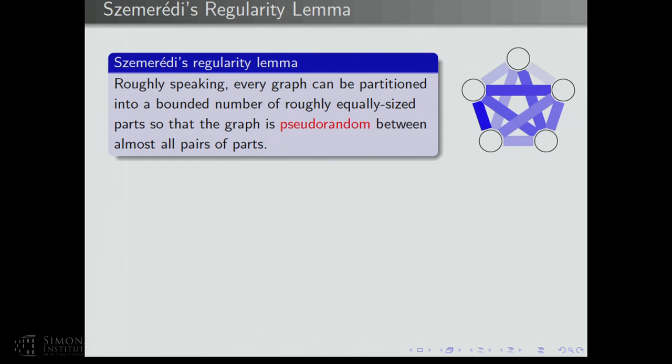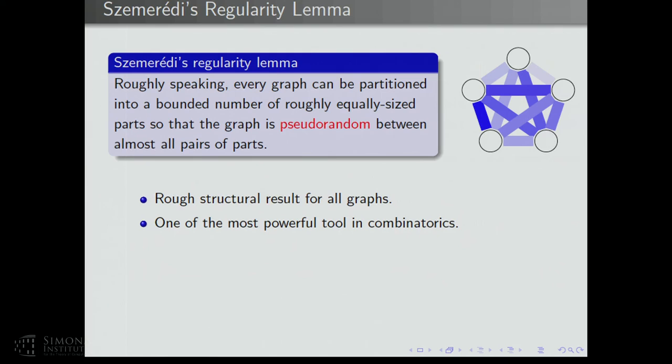This figure represents an example of a partition of the vertex set into a small number of parts, with coloring indicating essentially the density between each pair of parts. Between each pair of parts there's going to be some edge density, and it'll look like random with that edge density between the pair of parts. This gives a rough structural result for all graphs — every graph has one of these decompositions — and it's one of the most powerful tools we have in combinatorics.